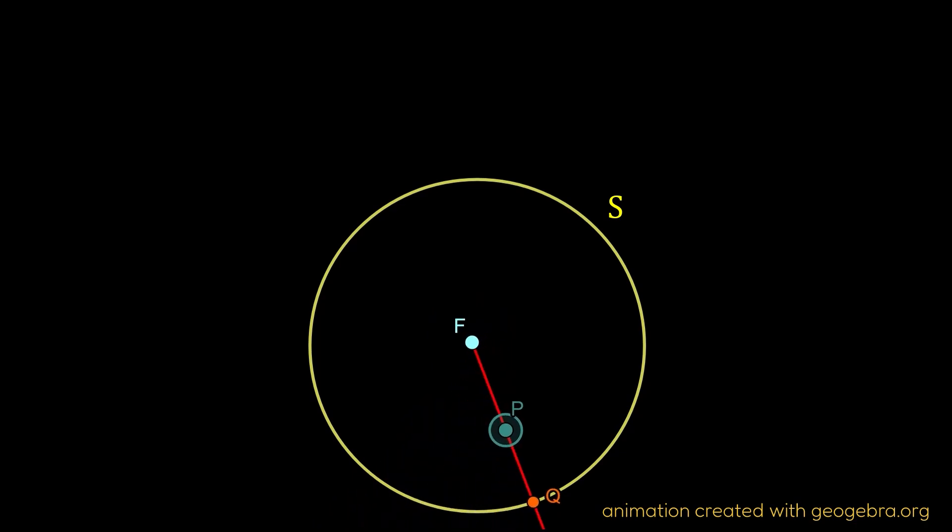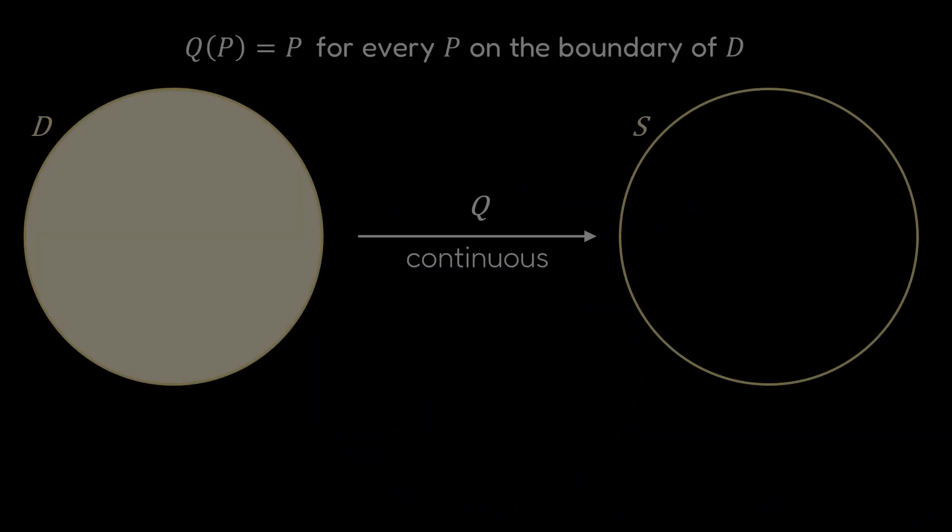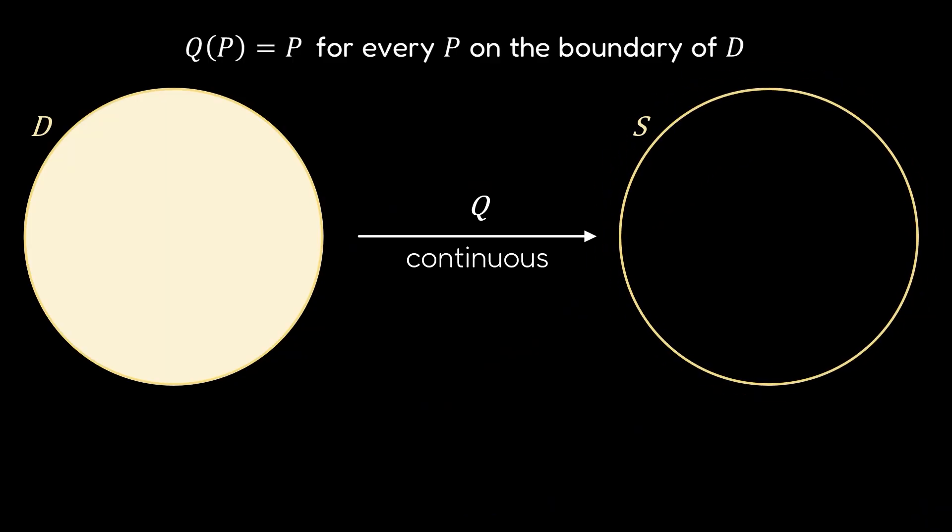And finally, it doesn't move the points on the boundary of the original disk. If P lies on the edge, the ray from F through P meets the final circle exactly at P. So Q and P coincide. Here I summarized the three properties just seen.